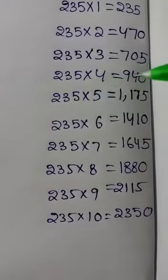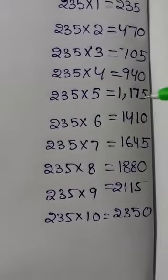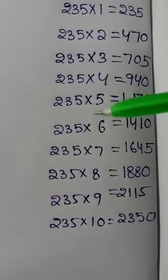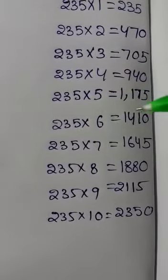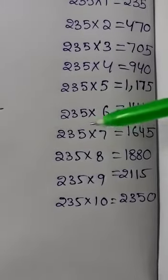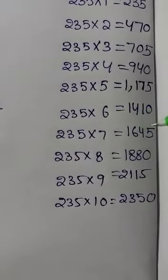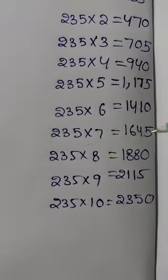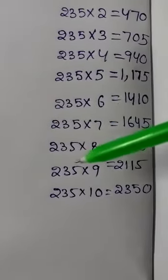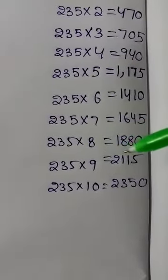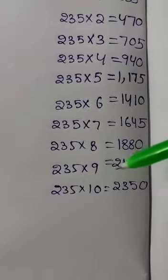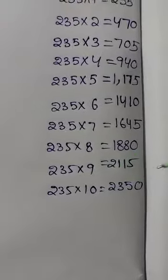235 into 5 is 1175. 235 times 6 is 1410. 235 times 7 is 1645. 235 times 8 is 1880. 235 times 9 is 2115. 235 times 10 is 2350.